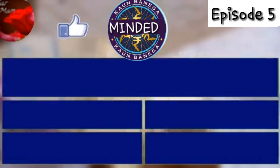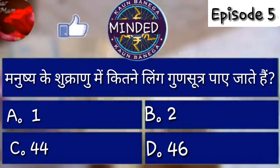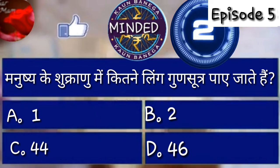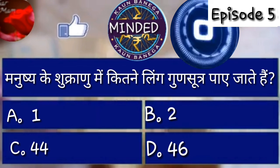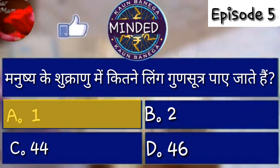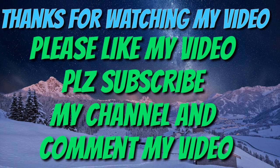Next question: मनुष्य के शुक्राणों में कितने लिंग गुणसूत्र पाए जाते हैं? Option A - 1, B - 2, C - 44, D - 46। समय समाप्त। इसका बहुत ही easy answer है - Option A, एक गुणसूत्र होता है जो लिंग गुणसूत्र कहलाता है।